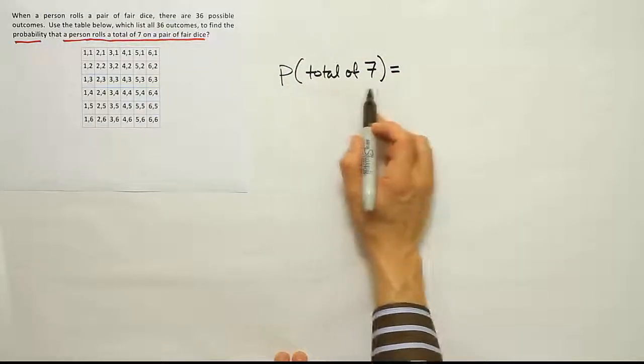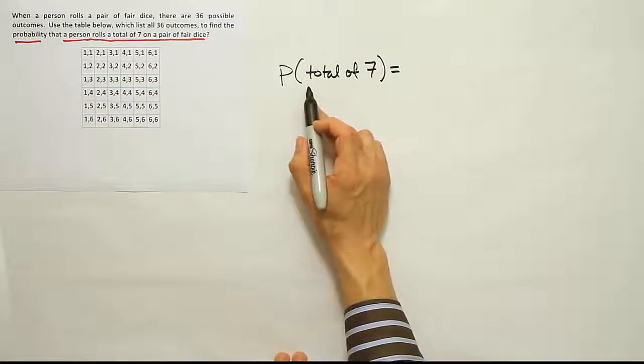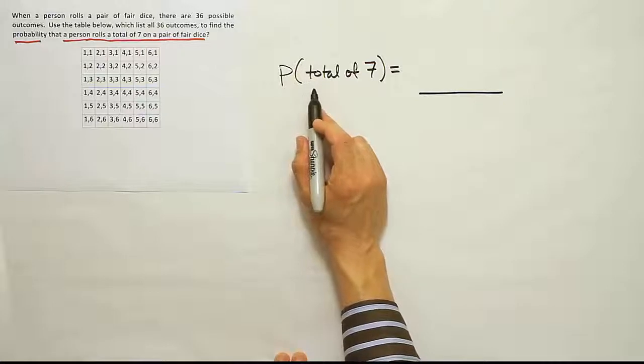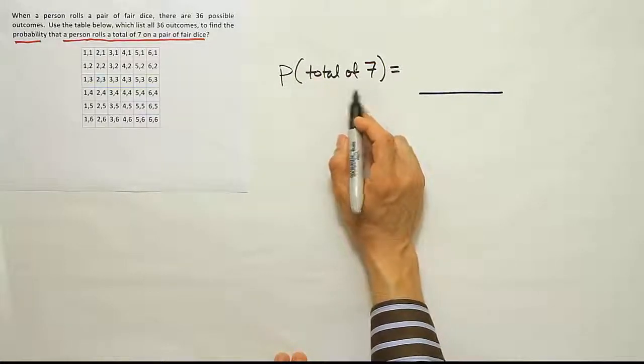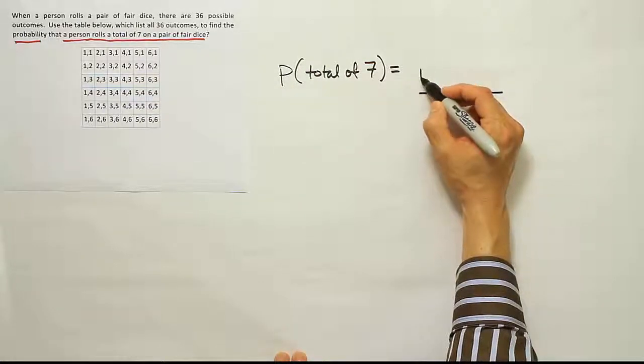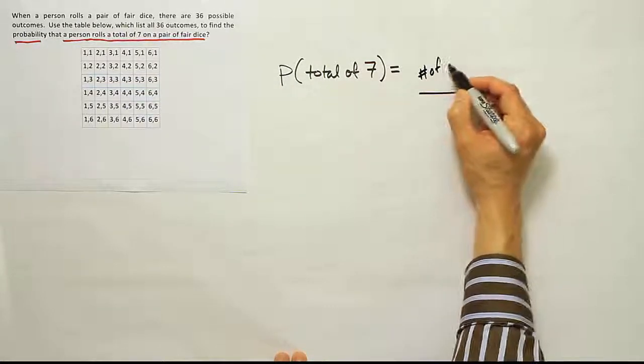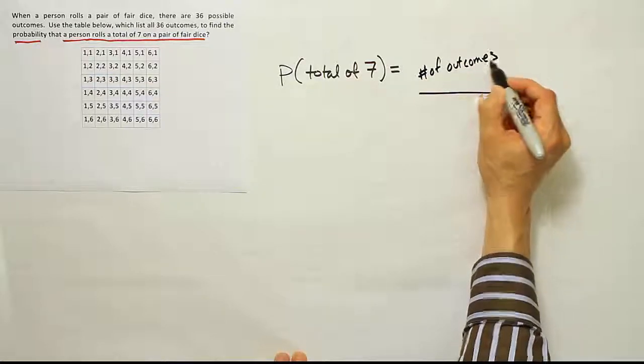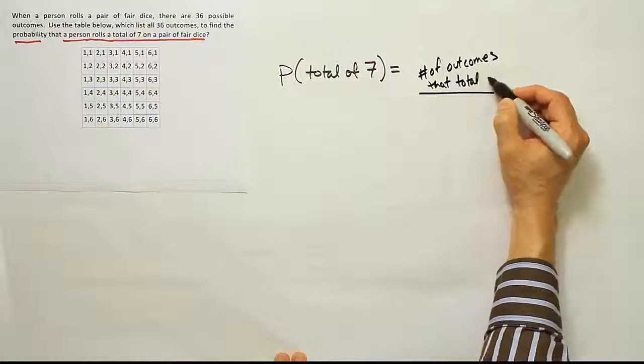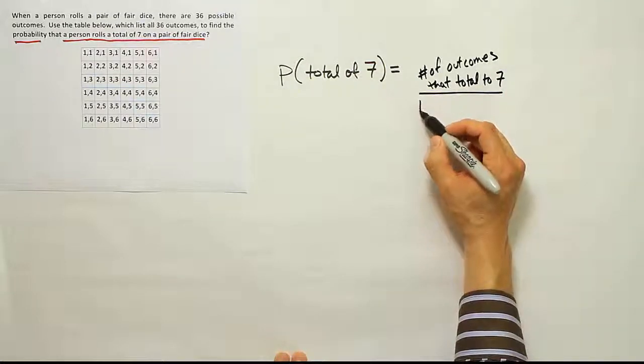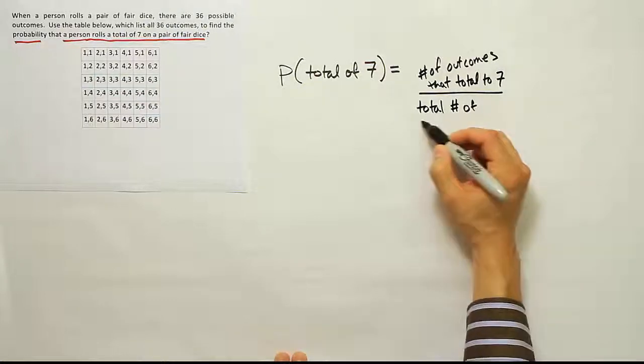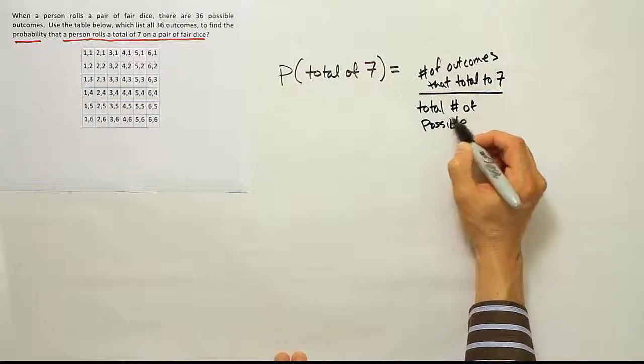Okay, once I have that phrase written out and expressed, then I have to take what's inside that parenthesis and express it in a fraction format. So I want to put the number of outcomes that total to 7 over the total number of possible outcomes.